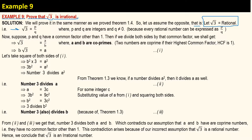So square root of 3 is equal to p by q, because every rational number can be put in the form p divided by q. Now suppose p and q have a common factor other than 1 — since p and q are just integers, not necessarily prime. Dividing, we write square root of 3 is equal to a divided by b, such that a and b are co-primes with highest common factor 1.